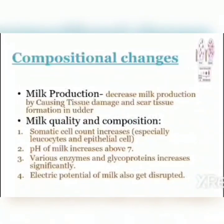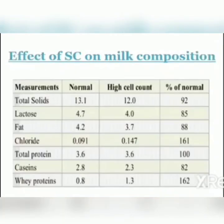Let's come to the compositional changes in milk due to mastitis. Due to this disease, milk production decreases drastically, mainly due to damaging of udder tissue or scar tissue formation. Milk produced from the infected udder has increased somatic cell count, especially epithelial cells and leukocytes. Due to these changes, the level of total solids, lactose, total casein, and fat content decreases, while total whey protein and certain ions — sodium, chloride, copper, ferrous, and zinc — increase significantly.